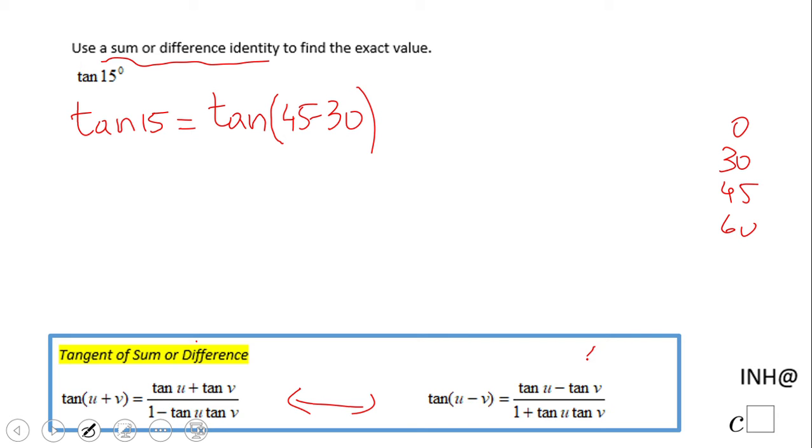That tells us we're going to use this formula: tangent of 45 minus tangent of 30 in the numerator, and be careful, the denominator is one plus tangent of 45 times tangent of 30.